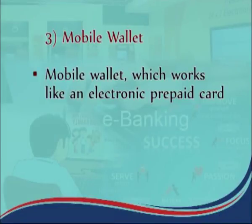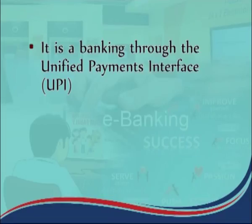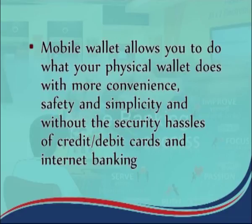Third is mobile wallet, which works like an electronic prepaid card. A user can pay from this mobile wallet for things from groceries to rail tickets without needing to swipe a debit or credit card or log into banking sites. It works through Unified Payment Interface. It is a way to carry credit or debit card information in digital form on your smart device. Instead of using a physical card to make purchases, you pay through your mobile wallet, which allows you to do what your physical wallet does with more convenience, safety, and simplicity.